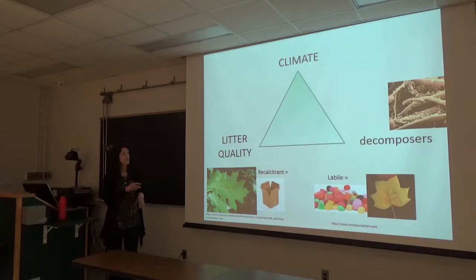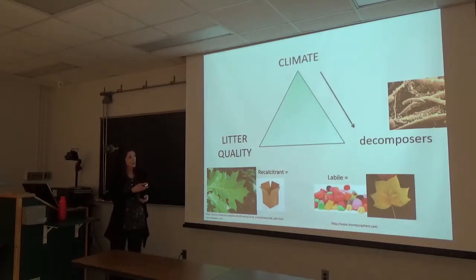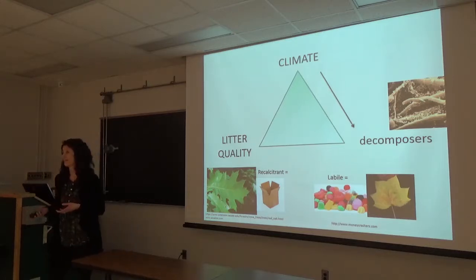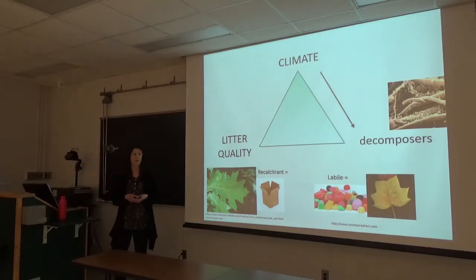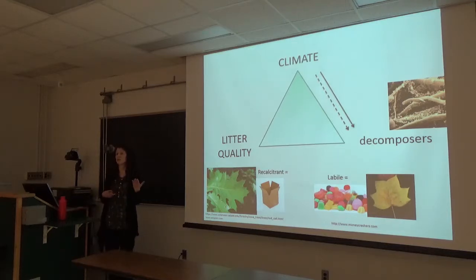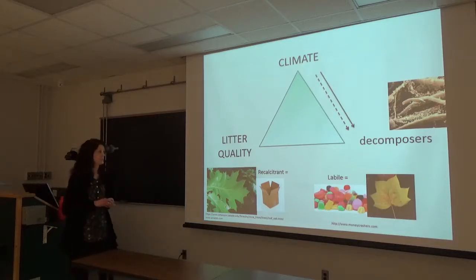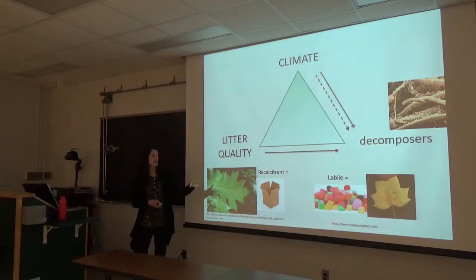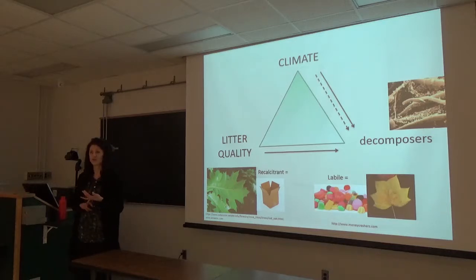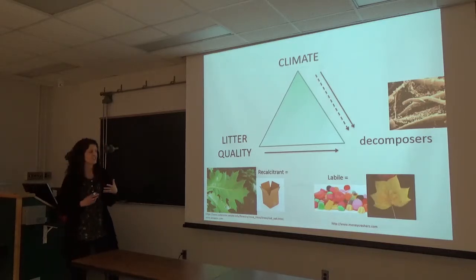Within this decomposition triangle, we have direct and indirect controls of climate and litter quality on the decomposers as well. Climate can directly impact the decomposer community through metabolic activity—if it's warmer, we'll have faster metabolism in these microbes. Or we can have indirect effects whereby cold- or warm-adapted enzymes are produced by these microbial decomposers. Litter quality has a direct control over decomposers—they prefer labile compounds that are easy to break down and offer a high energy return.